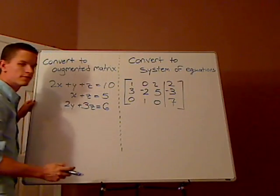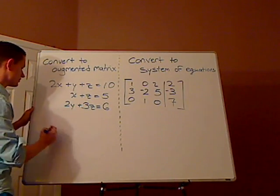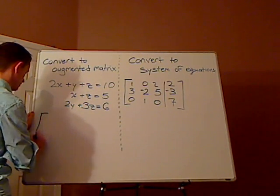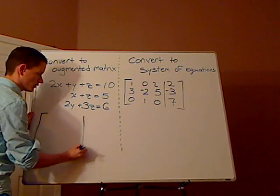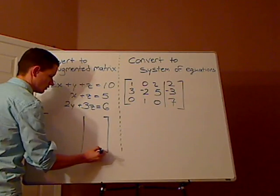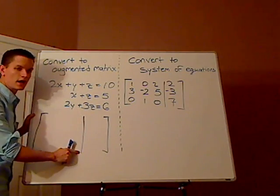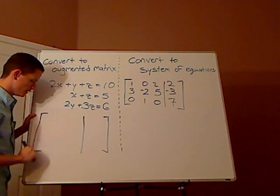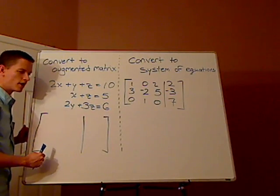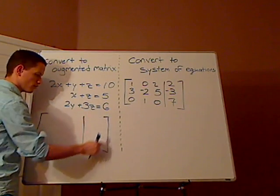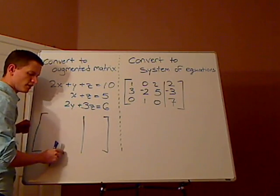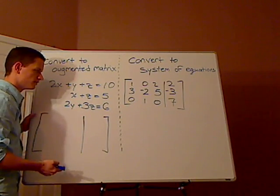Alright, so the first thing you want to do is you want to set up your matrix. Now an augmented matrix has basically two parts. It's separated by a solid line. On the outsides, you have the brackets and they're enlarged. Brackets around like a 3 by 3 signify it's a matrix.